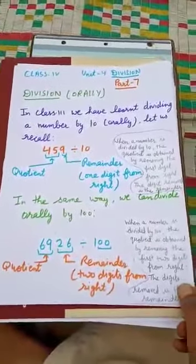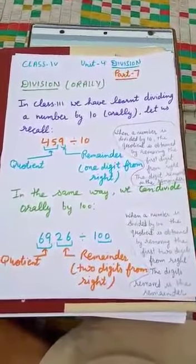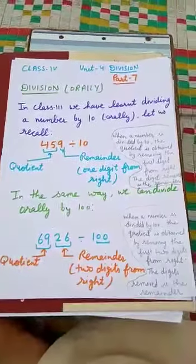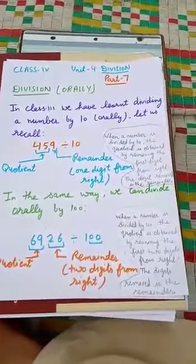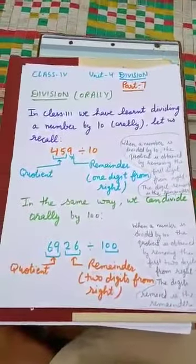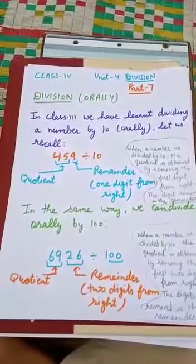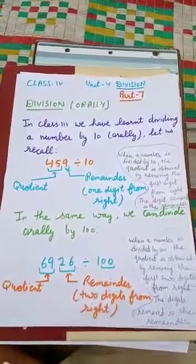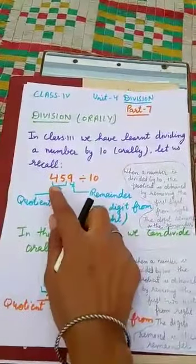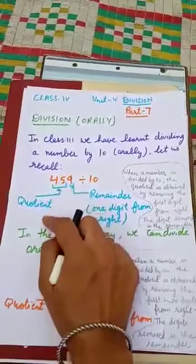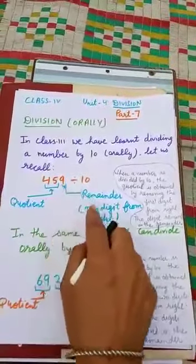Let us divide 459 by 10. We know that when a number is divided by 10, the quotient is obtained by removing the first digit from the right, and the digit removed is the remainder. When we divide 459 by 10, to get the quotient, we will remove the first digit from the right. Here the quotient is 45 and 9 is the remainder.